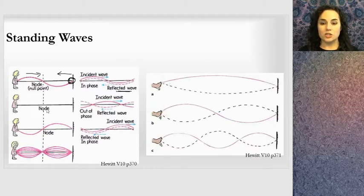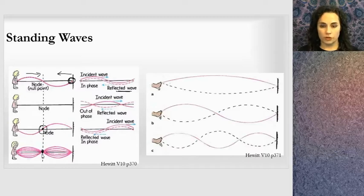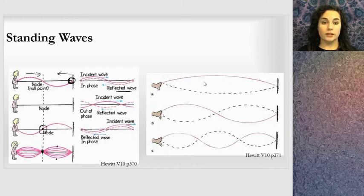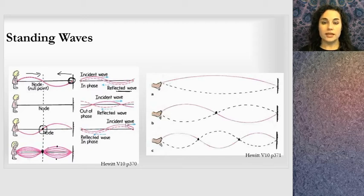When there is destructive interference all of the time, we get a node, and that node stays in the same spot. When you take multiple pictures of that string vibrating up and down, that position will never move — we call that the node. If the girl waves her hand faster or much faster, we get this interference happening more frequently. One pattern has no nodes, one has one node, and another has two nodes outside of the ends, which can also be considered nodes.